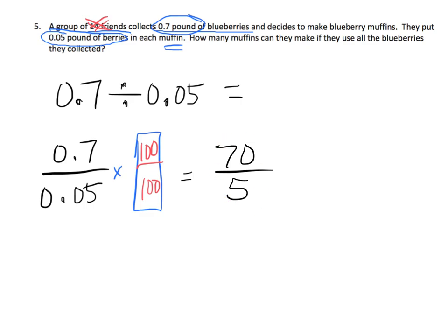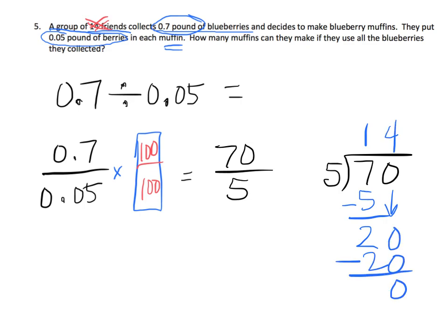So, now we have 70 divided by 5. And we're probably going to need to use scratch paper. So, 70 divided by 5. 7 divided by 5 is 1 with 2 left over. 20 divided by 5 is 4 with nothing left over. So, our answer is 14. They can make 14 muffins.